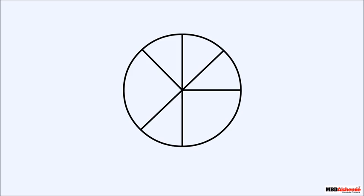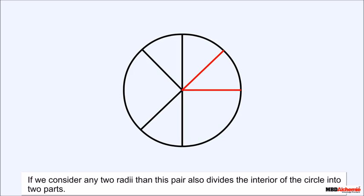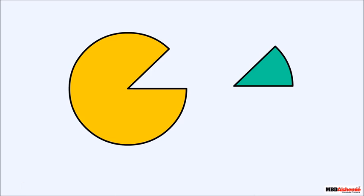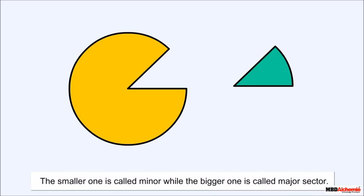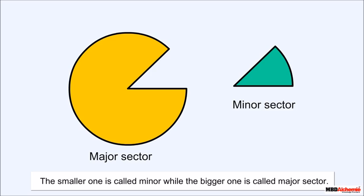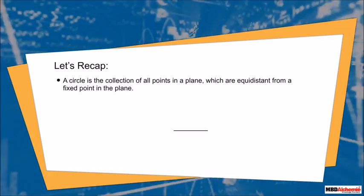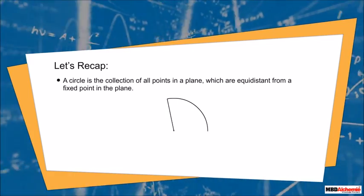A circle has infinite radii of the same length. If we consider any two radii, this pair divides the interior of the circle into two parts. Each part is called a sector. The smaller one is called the minor sector and the bigger one is called the major sector.